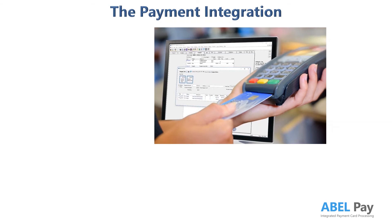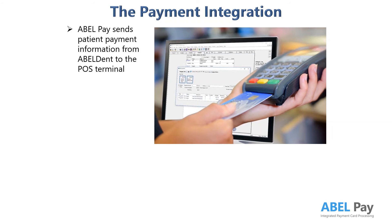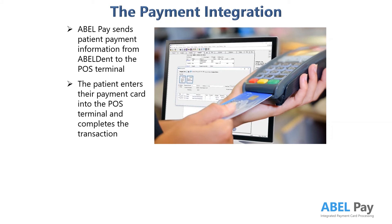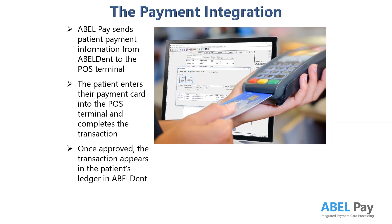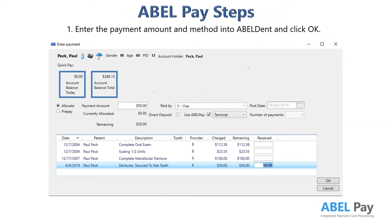When you enter a payment transaction into AbleDent that requires a payment card, AblePay will automatically send the payment information to the POS terminal. The patient enters their payment card into the POS terminal and completes the transaction. Once the transaction is approved, it appears in the patient's ledger in AbleDent.